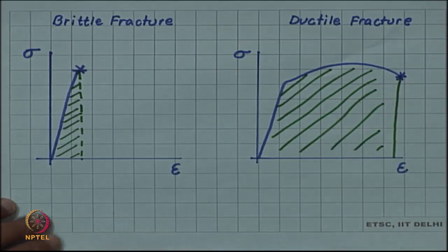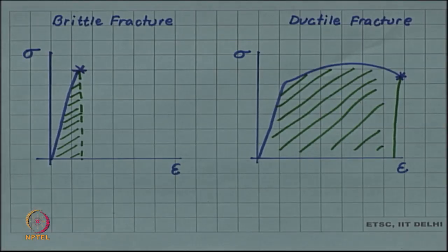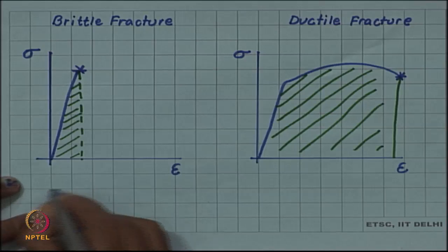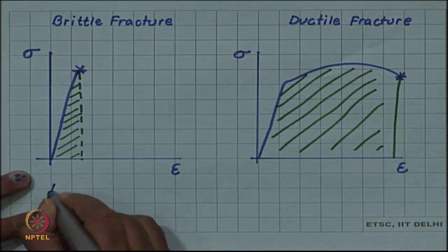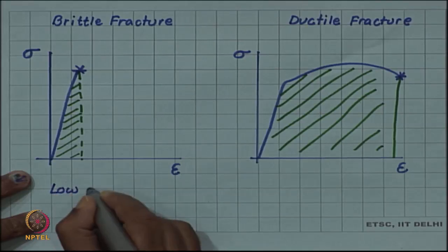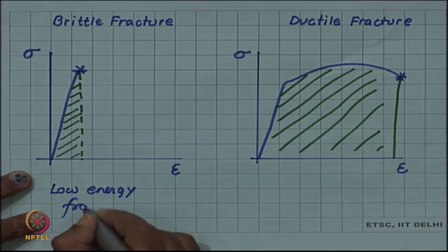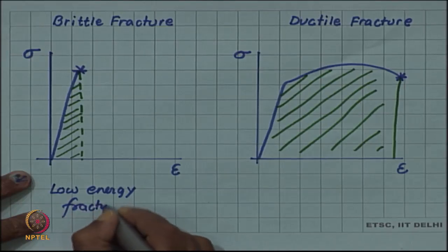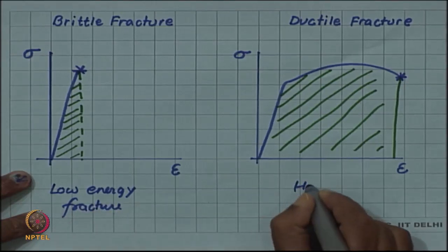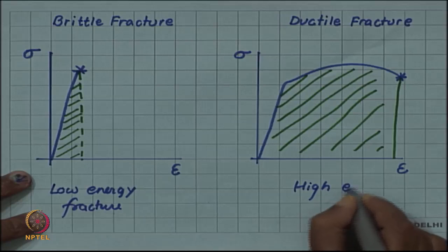The energy absorbed in brittle fracture is very low, whereas the energy absorbed in ductile fracture is much, much more. So we can call brittle fracture a low energy fracture and ductile fracture a high energy fracture.